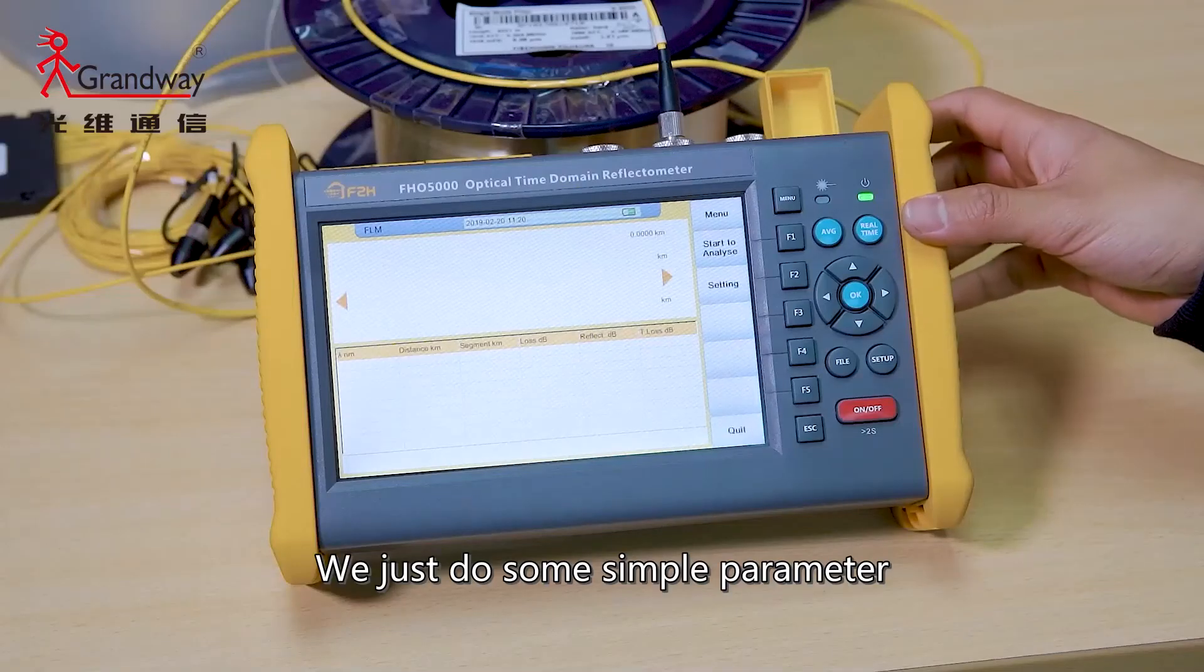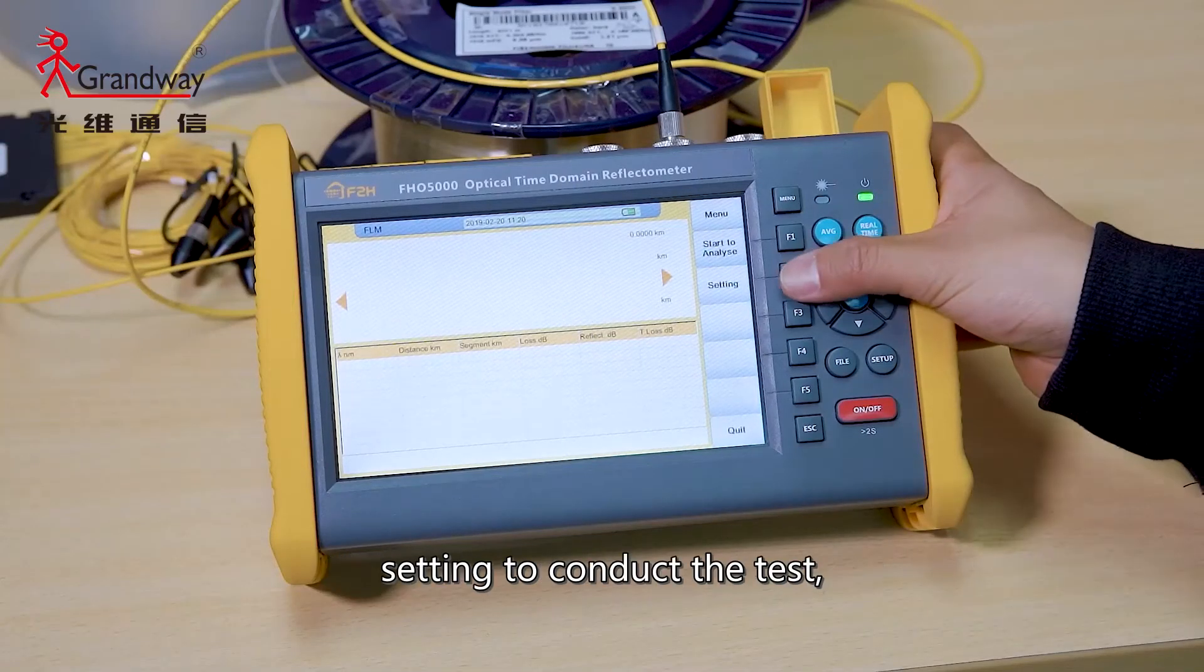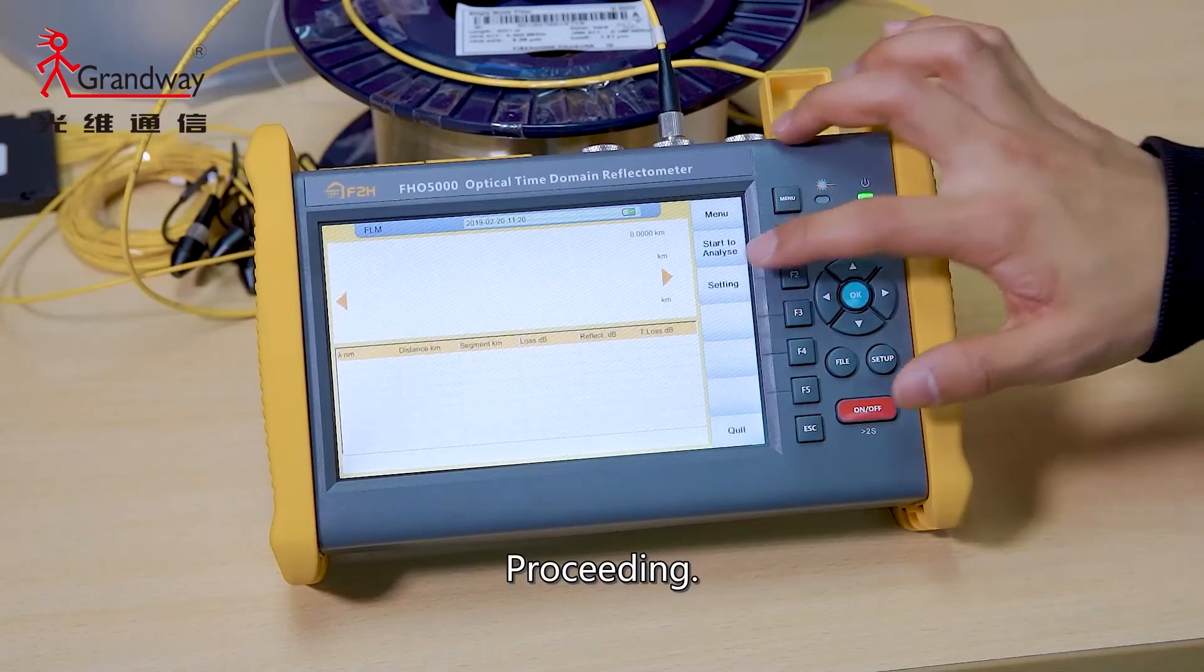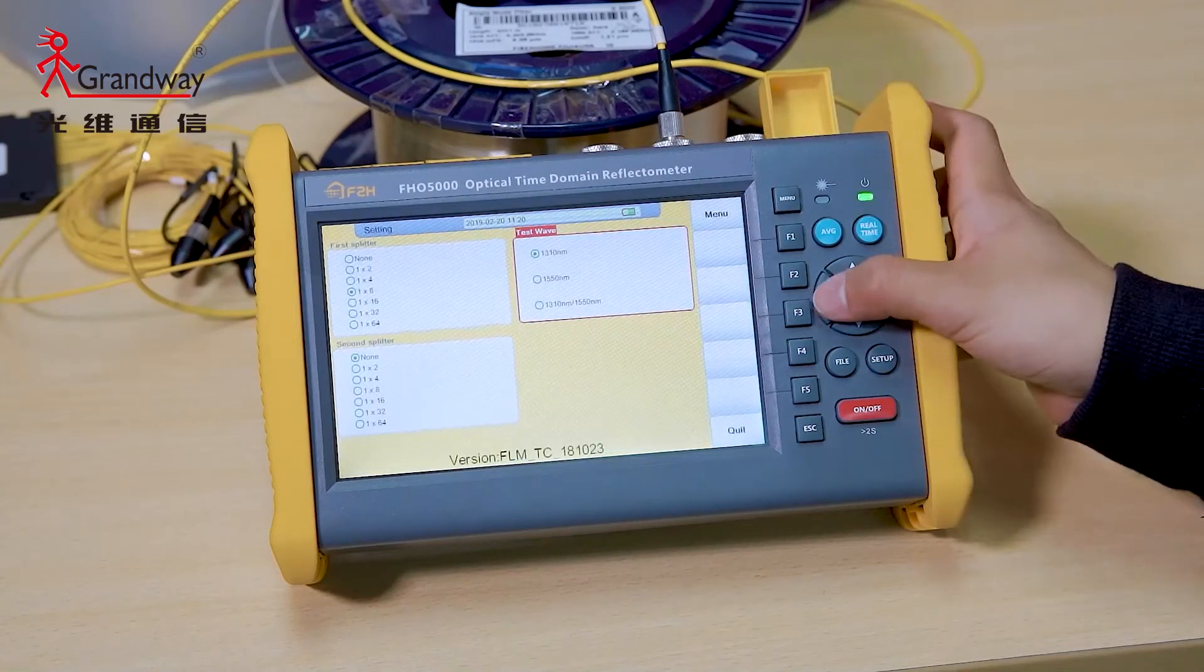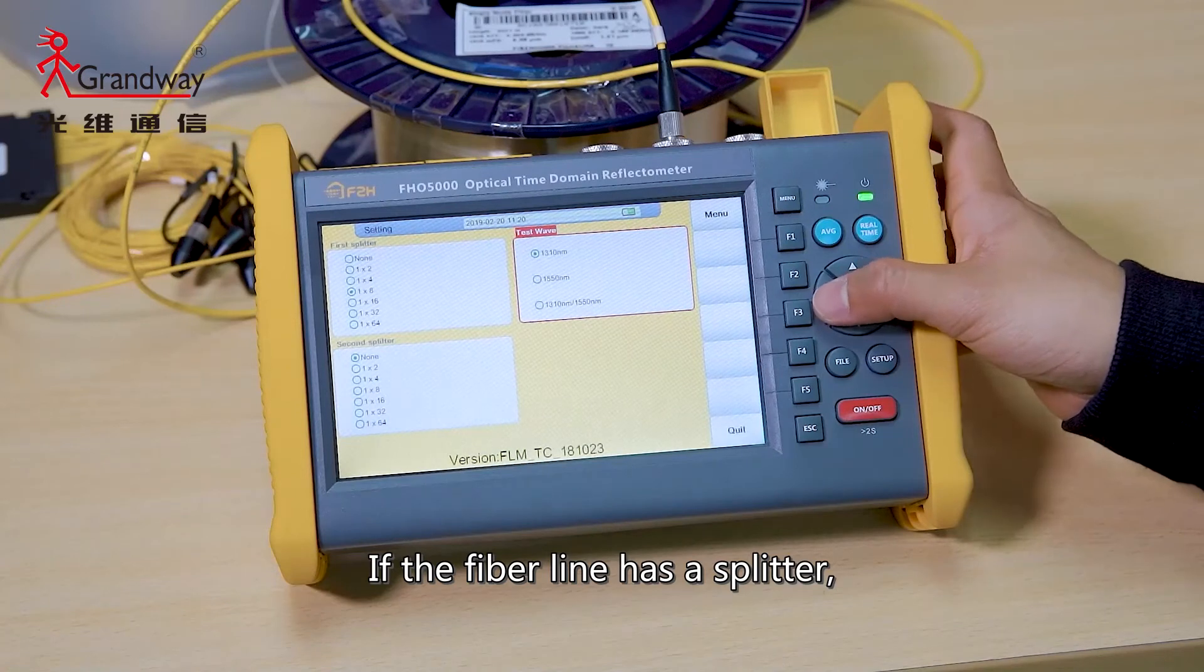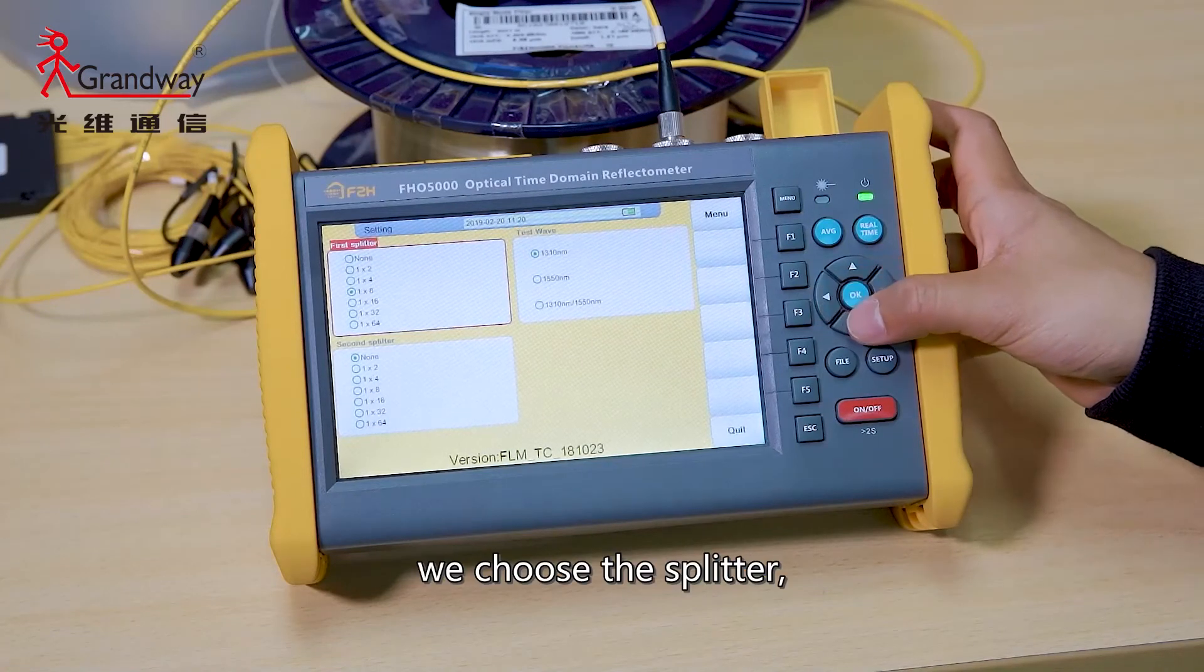We just do some simple parameter setting to conduct the test. Press setting. If the fiber line has a splitter, we choose a splitter.